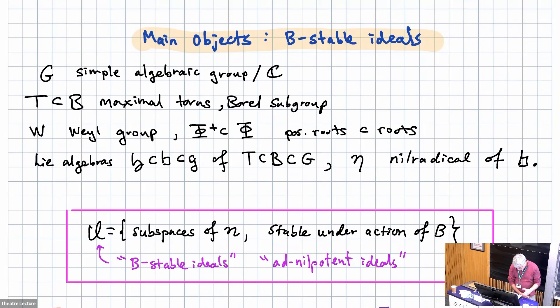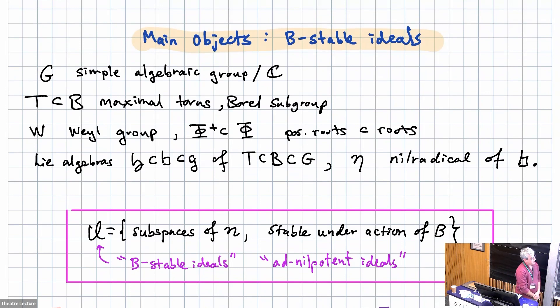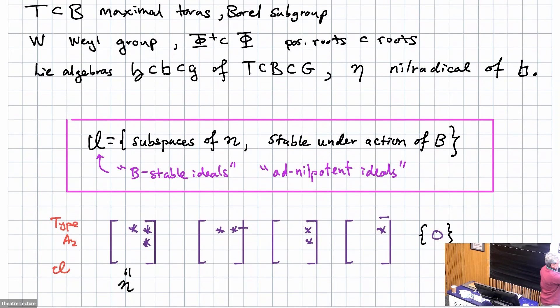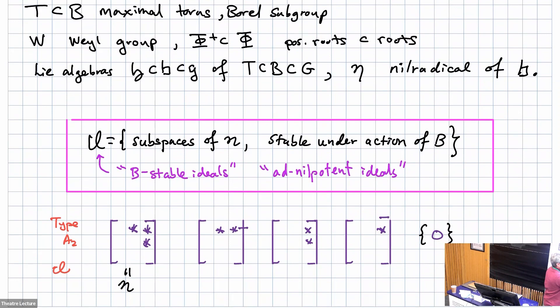The combinatorial object — a finite set of objects that play a role throughout the talk — are the subspaces of the nil radical, which is the upper triangular matrices in GL_N, that are stable under the action of the Borel. They can be called ad-nilpotent ideals, B-stable subspaces, or B-stable ideals because they're ideals in the Lie algebra of the Borel. In type A2, GL3 or SL3, there are only five of these: the strictly upper triangular matrices, and four others including zero.